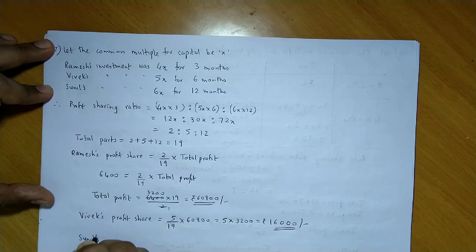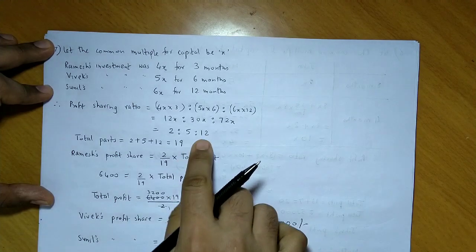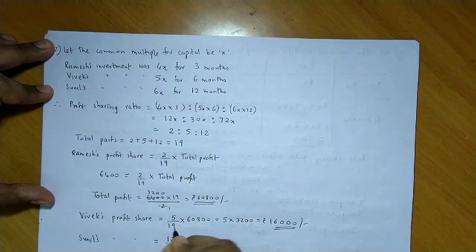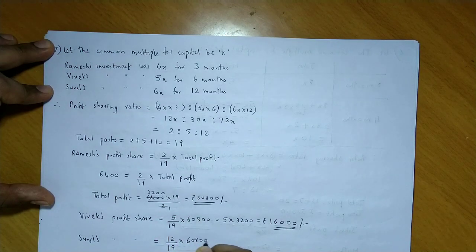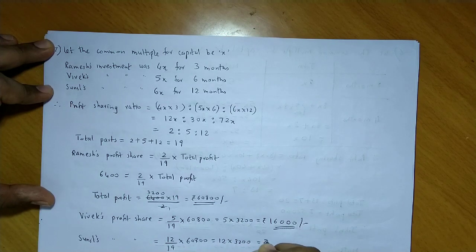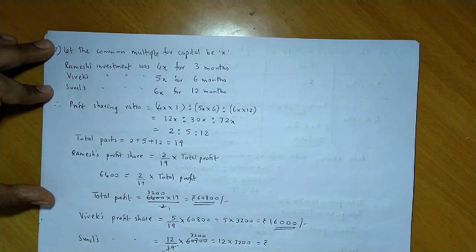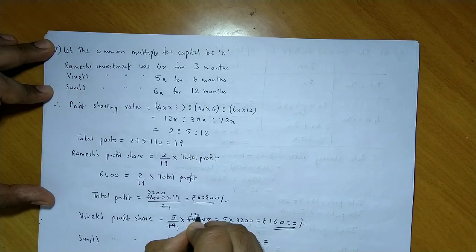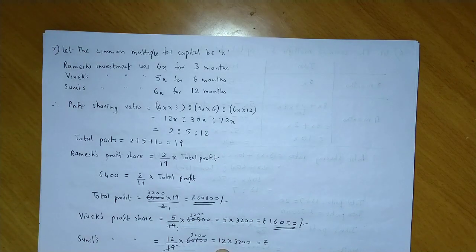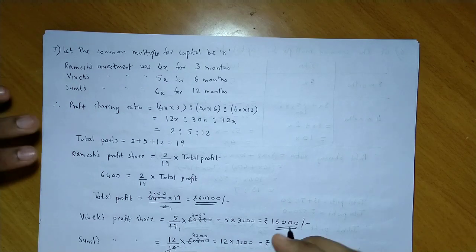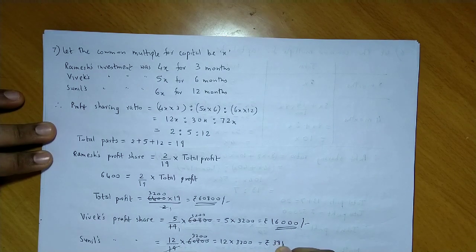Next, Sunil's profit share = (12/19) × 60,800. This simplifies to 12 × 3200 = 38,400. So Sunil's profit share is 38,400.